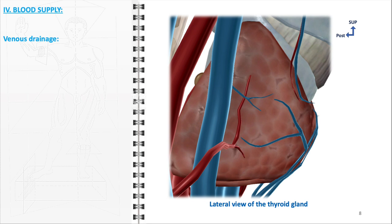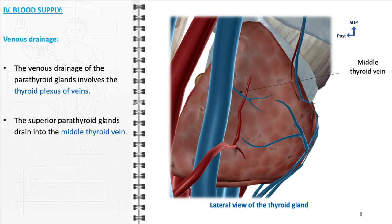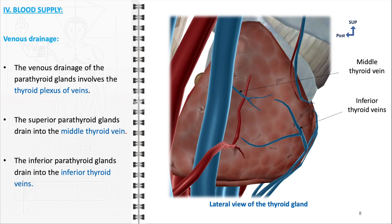The venous drainage system of the parathyroid glands facilitates the removal of deoxygenated blood and metabolic waste. This system is primarily integrated with the thyroid plexus of veins, a network encompassing the thyroid gland and its associated structures, including the parathyroid glands. For the superior parathyroid glands, venous drainage is typically achieved through the middle thyroid vein, which channels blood toward larger veins in the neck and eventually drains into the internal jugular vein. The inferior parathyroid glands drain predominantly through the inferior thyroid veins, which subsequently merge with larger veins such as the brachiocephalic veins.